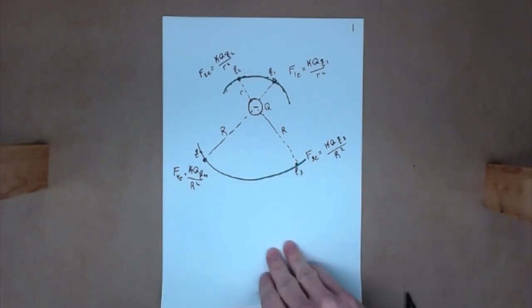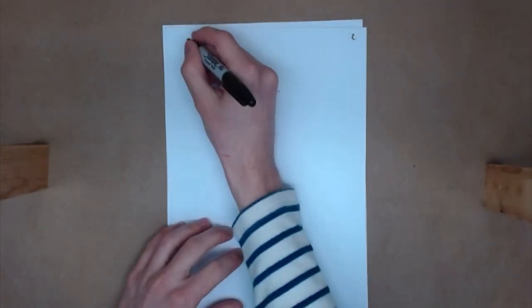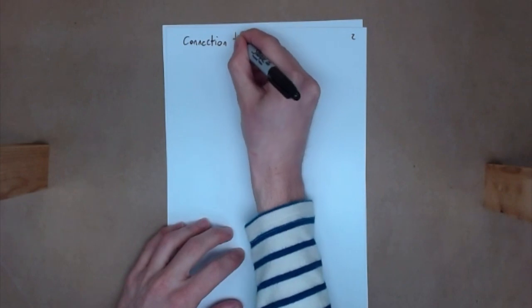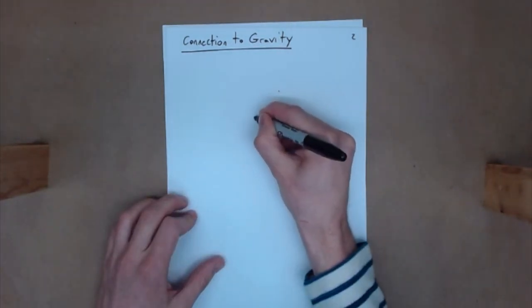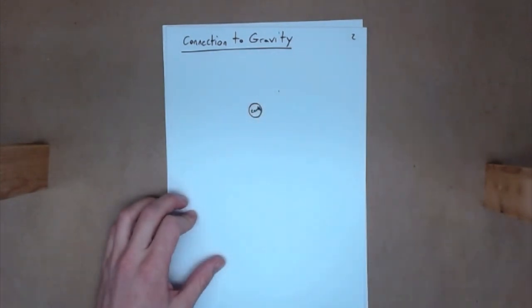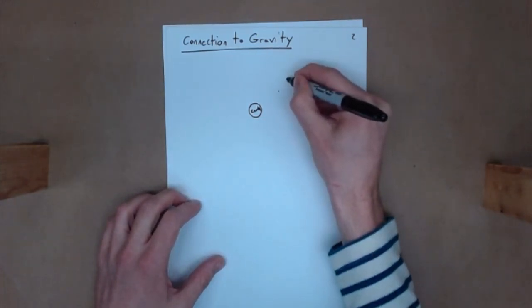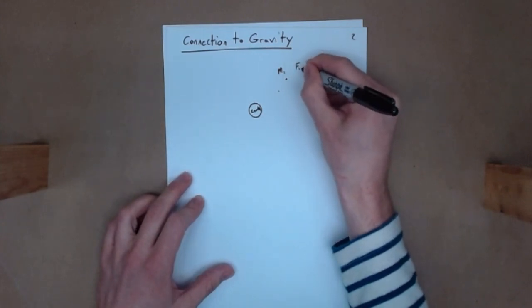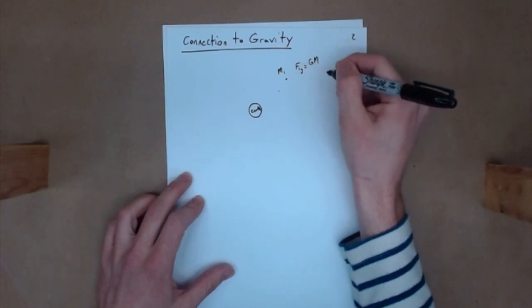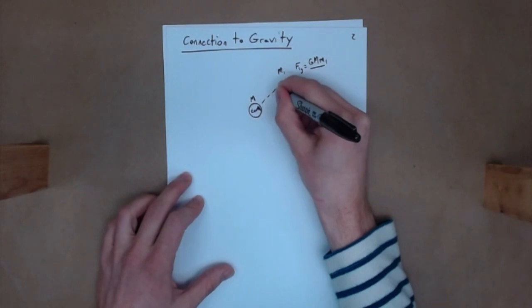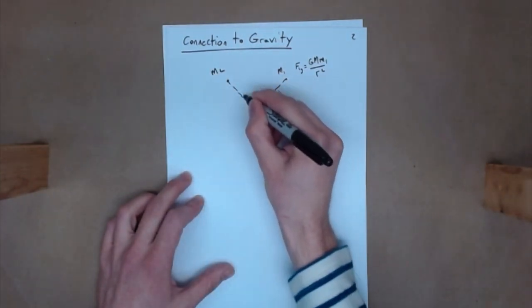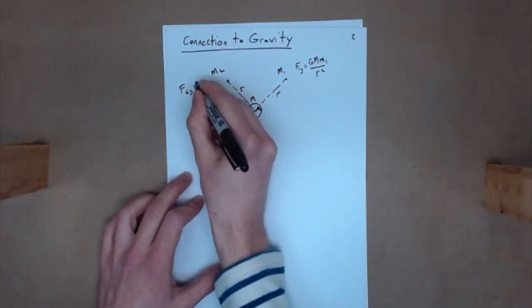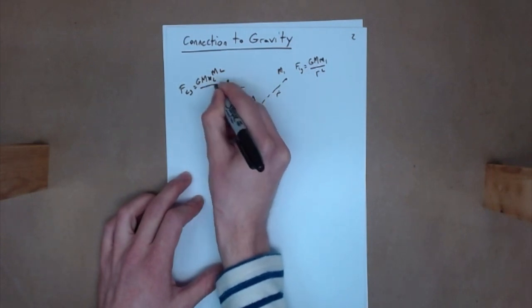Before going further with electrostatics, I want to take a brief detour into gravity. Let's replace our balloon with a mass — the Earth. If I take another mass, like a satellite M1 at distance R, it experiences a gravitational force equal to G·M_earth·M1 / R². Another mass M2 at the same distance R gives F2G = G·M_earth·M2 / R². We really have the same kind of deal going on here.